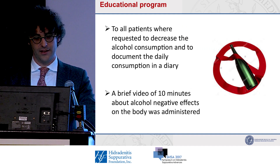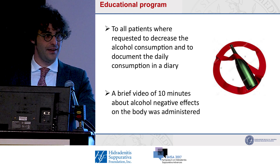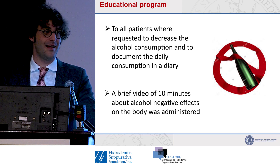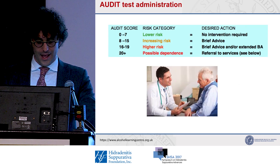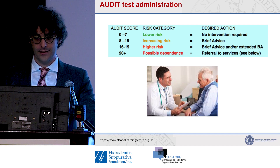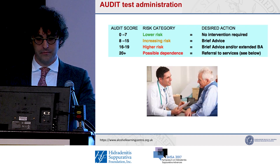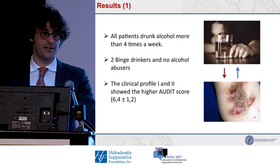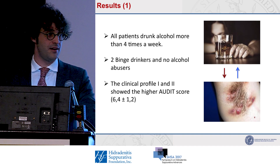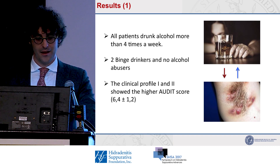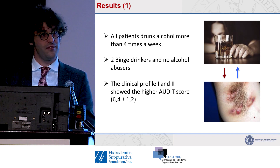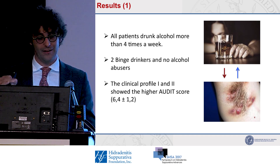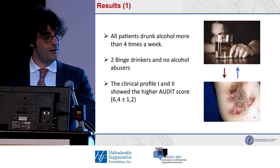All patients at the first visit were asked to decrease alcohol consumption. To provide rationale, we administered a 10-minute video about the negative effects of alcohol. Looking at the AUDIT in depth: for patients scoring more than seven points, an intervention is needed. In our 127 patients, drinking more than five times a week and two binge-drinking episodes is not a prevalent issue. However, clinical phenotypes one and two — those with lower auto-inflammatory levels — showed the highest AUDIT scores, meaning they use more alcohol than the others.